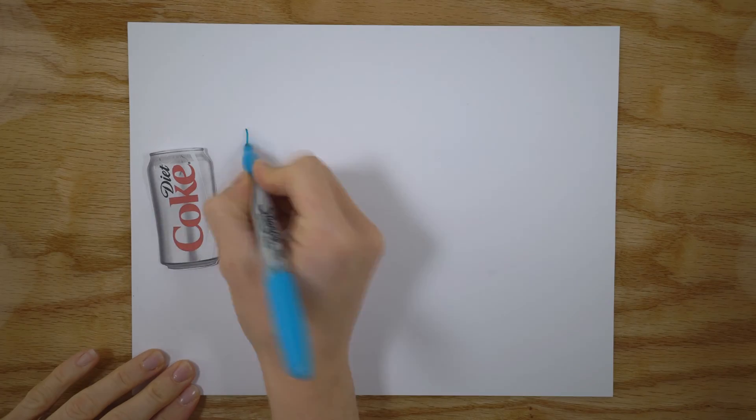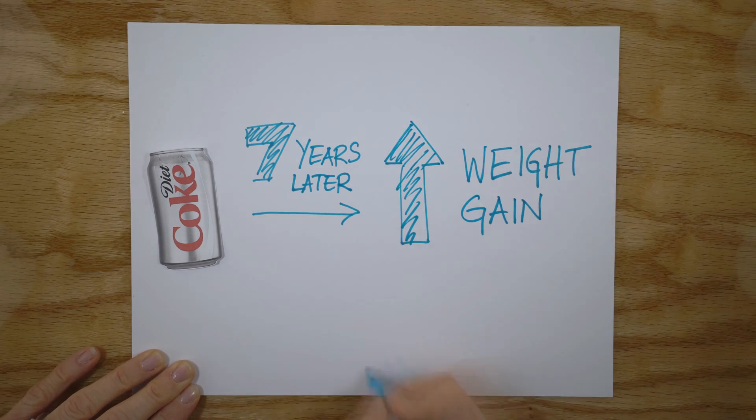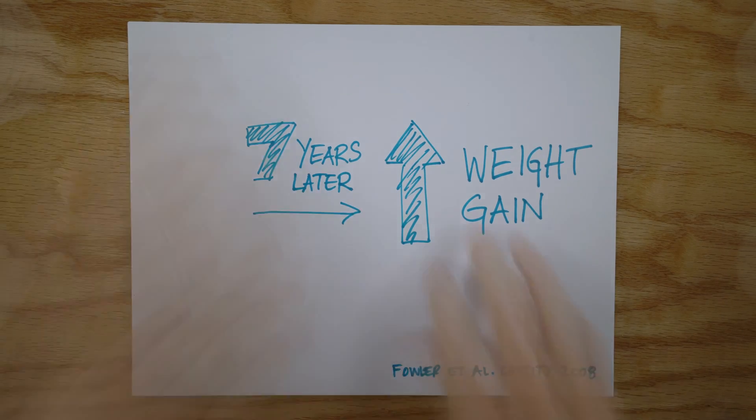This is why I also wanted to look at some prospective cohort studies, where researchers identify a cohort of free-living people, assess their health status and what they eat, and then check back in with them every few years to look for changes in health. One study found the more diet soda consumed, the greater the weight gain seven years later.